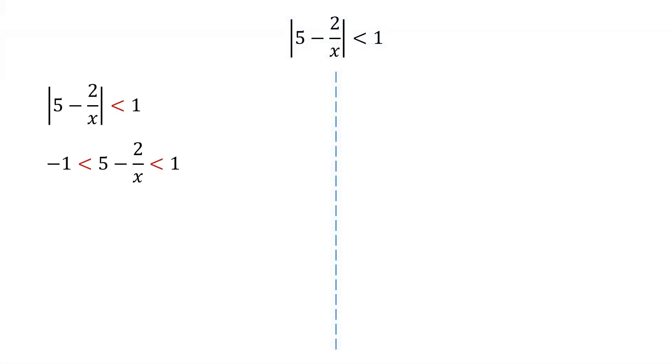Modulus of 5 minus 2 over x less than 1 implies that the quantity 5 minus 2 over x lies between minus 1 and 1.